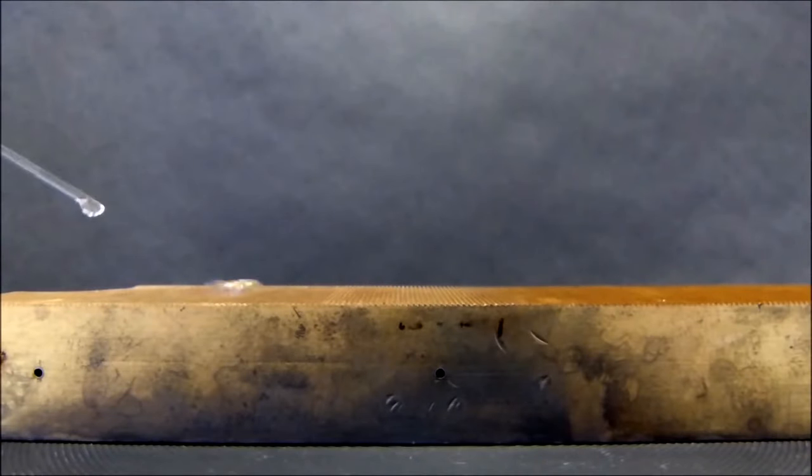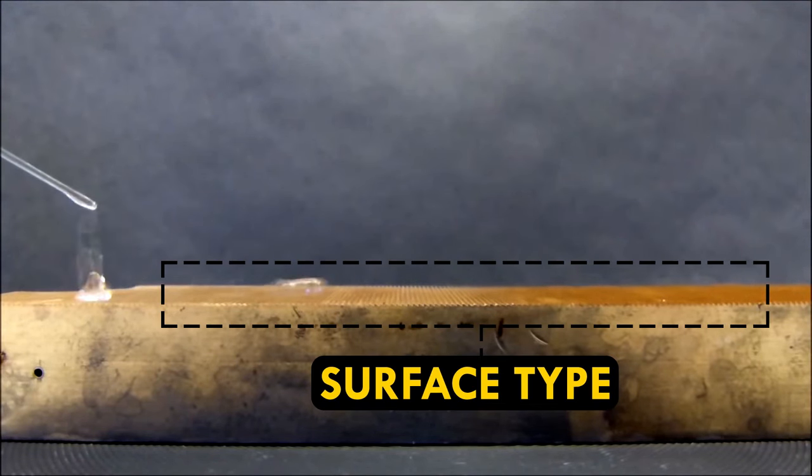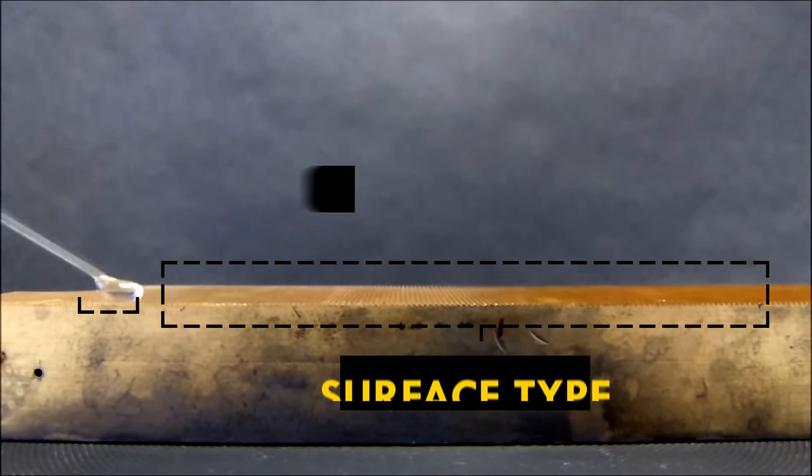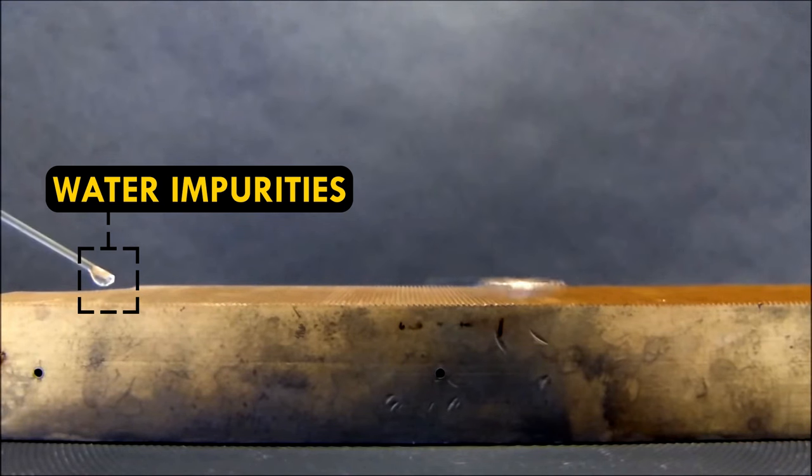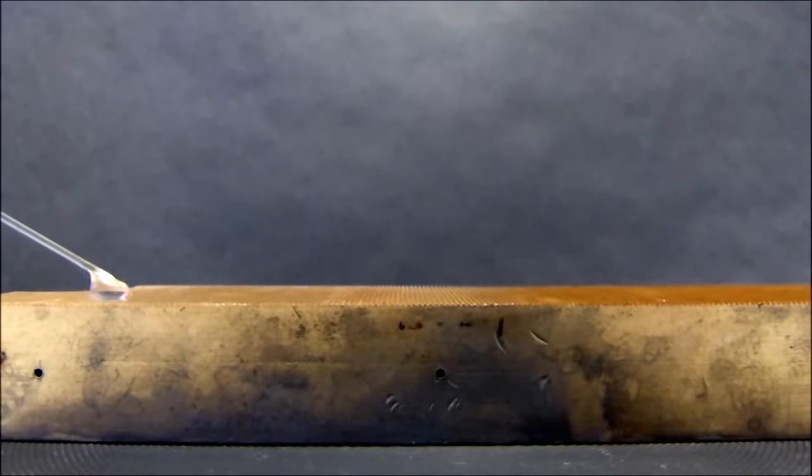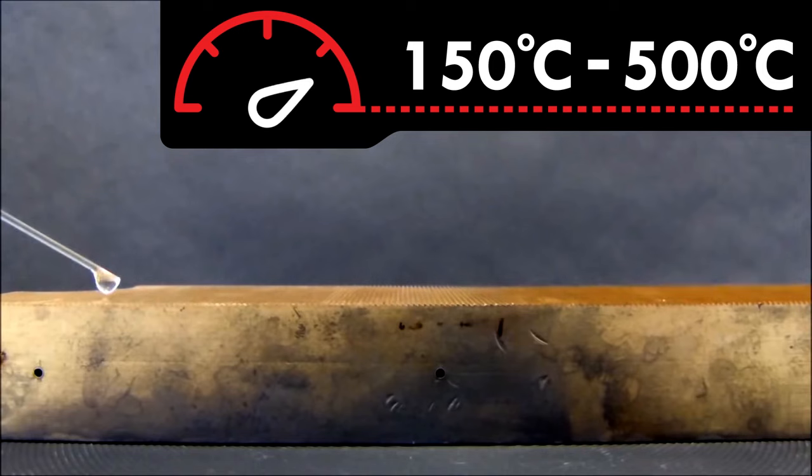The exact temperature of the onset of Leidenfrost can be complicated. It can vary depending on what the surface is like. Is it smooth or rough, or what impurities are in the water? Different scientists have reported Leidenfrost happening everywhere from about 150 degrees Celsius to over 500 degrees Celsius.